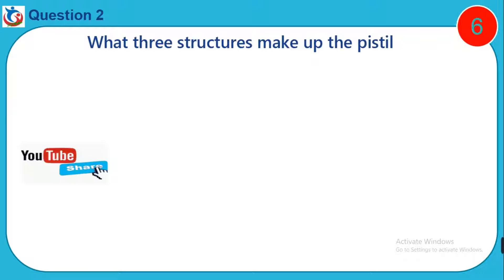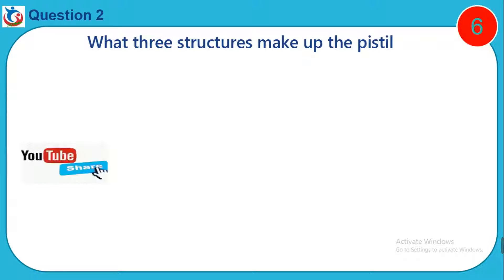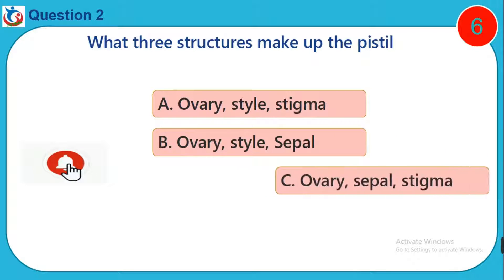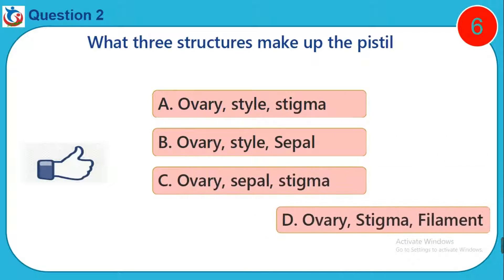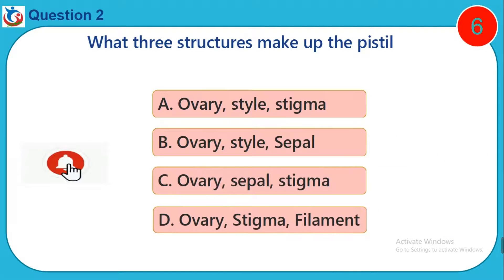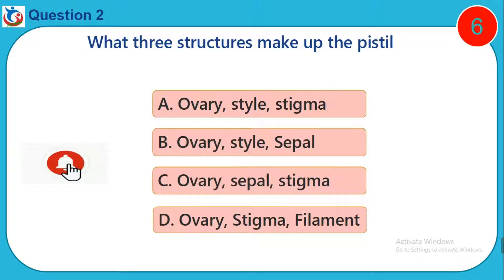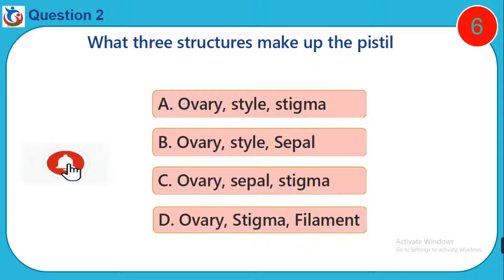Question 2. What three structures make up the pistil? A. Ovary, style, stigma. B. Ovary, style, sepal. C. Ovary, sepal, stigma. D. Ovary, stigma, filament.